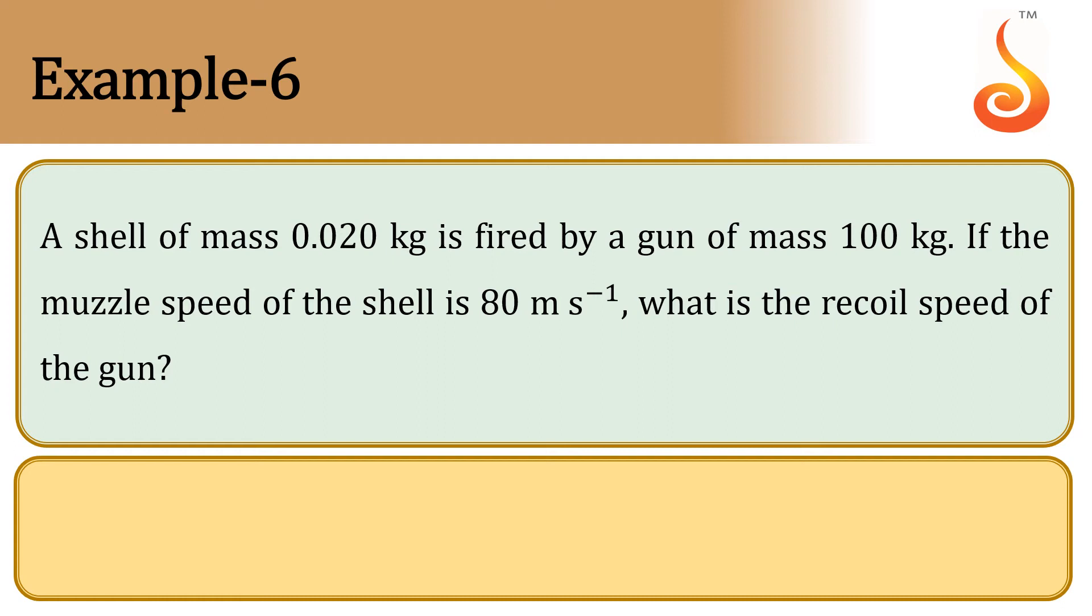Example 6. A shell of mass 0.02 kg is fired by a gun of mass 100 kg. If the muzzle speed of the shell is 80 meters per second, what is the recoil speed of the gun?